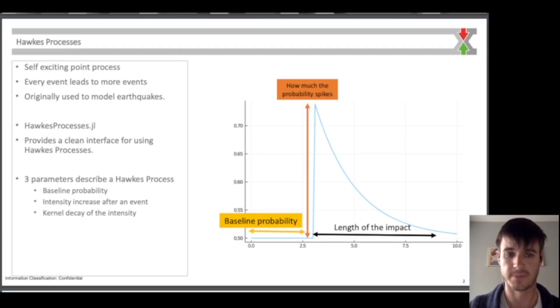There are three parameters that describe a Hawkes process: the baseline probability, indicated by the yellow arrow; the intensity increase after each event, showing how much that probability spikes, indicated by the orange arrow; and the decay of this intensity over time, indicated with the black arrow.